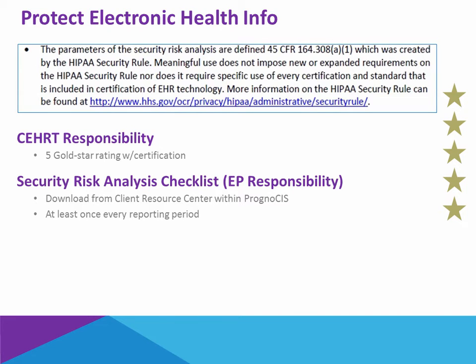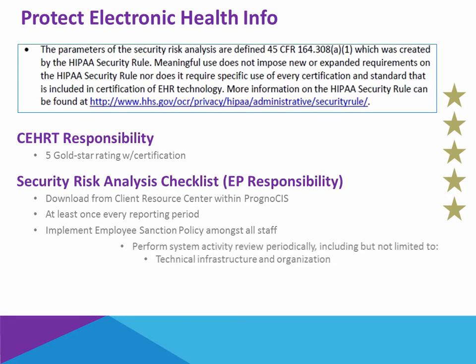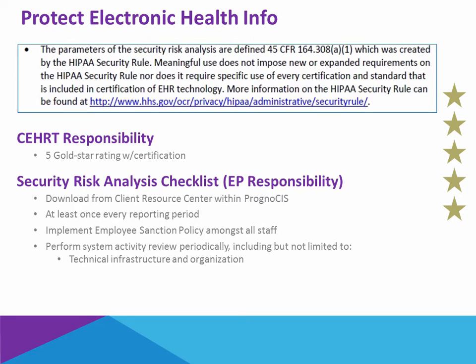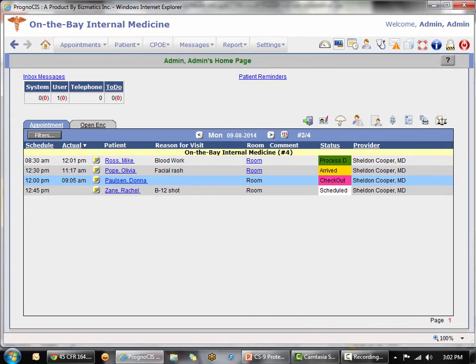This risk checklist needs to be done at least once every reporting period. It involves implementing employee sanction policies amongst all your staff members, performing system activity reviews periodically — which would include but are not limited to the technical infrastructure of your practice and the organization itself — your physical safeguards as to document storage and workflow, user security, and things of that nature. There is nothing on a patient or encounter level in Prognosis relevant to Core Set 9. However, the checklist can be downloaded from the resource center.